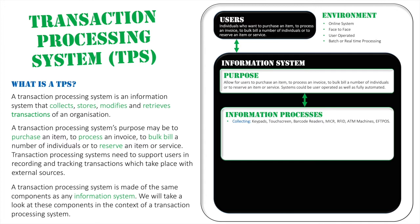Moving on to the information processes — for collecting, data may be collected through keypads and touchscreens, but also through barcode readers, MICR scanners, RFID, ATM machines, and FPOS systems. These can all be used to scan data from credit cards, checks, or products. Barcode scanners and RFID specifically scan a barcode, and that barcode is a primary key which refers to a record on a database for further data to be retrieved.